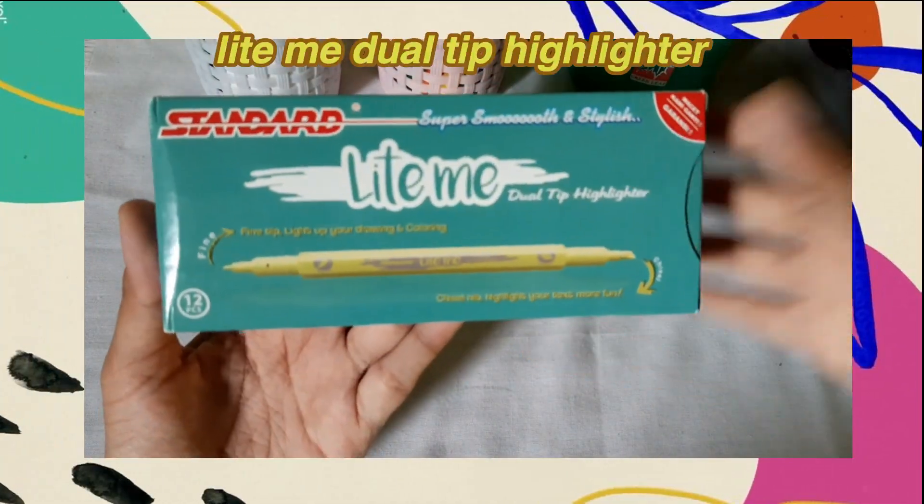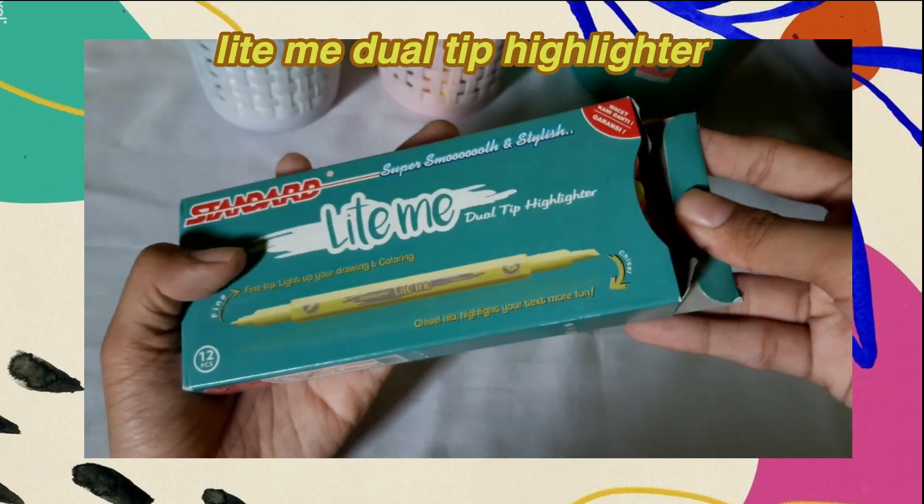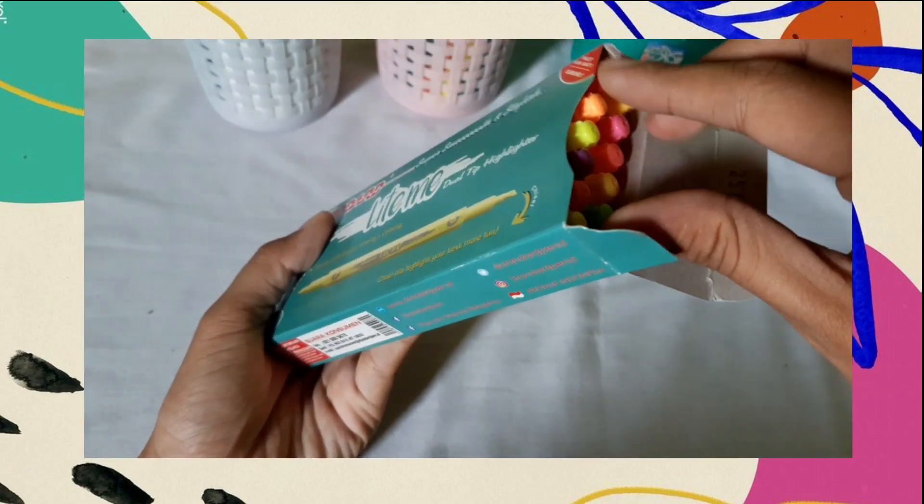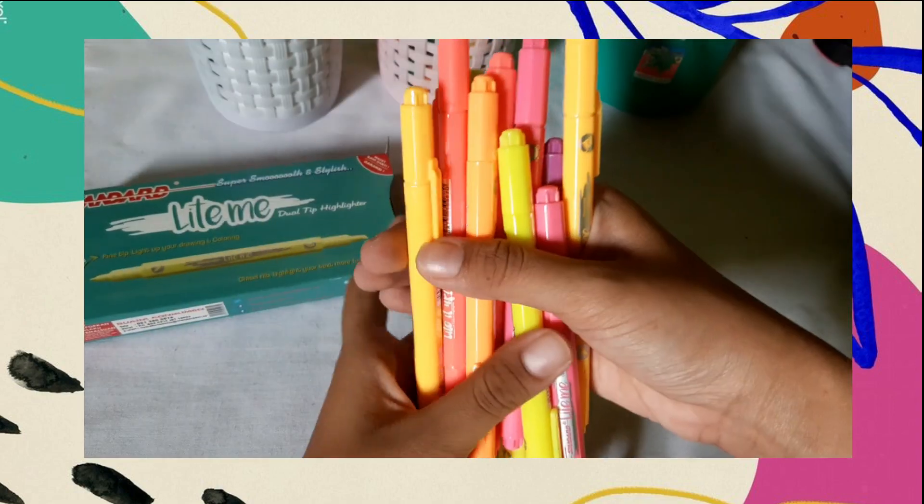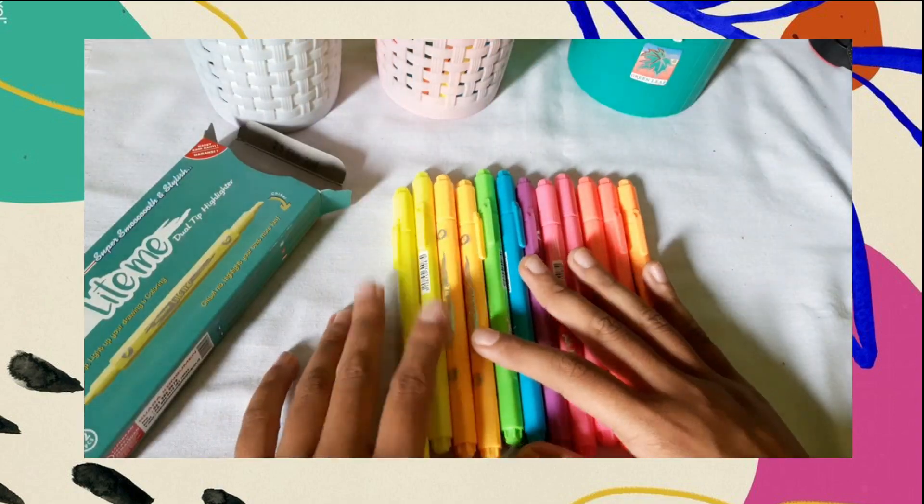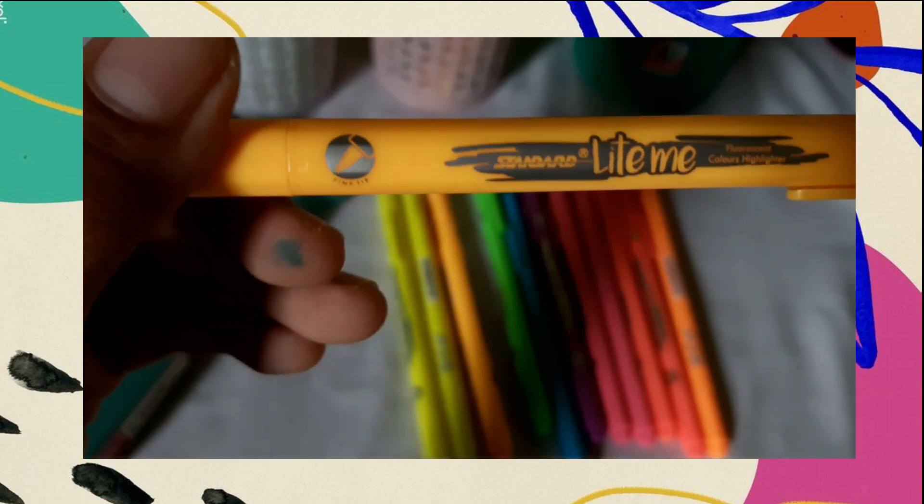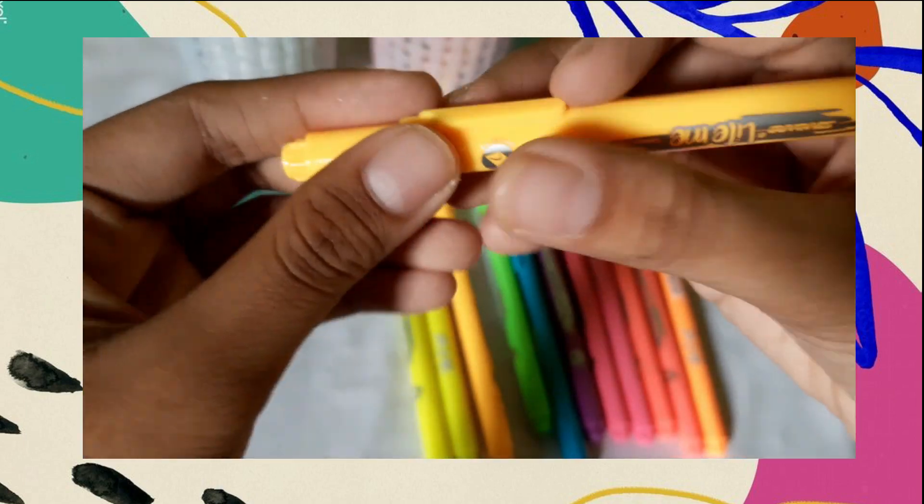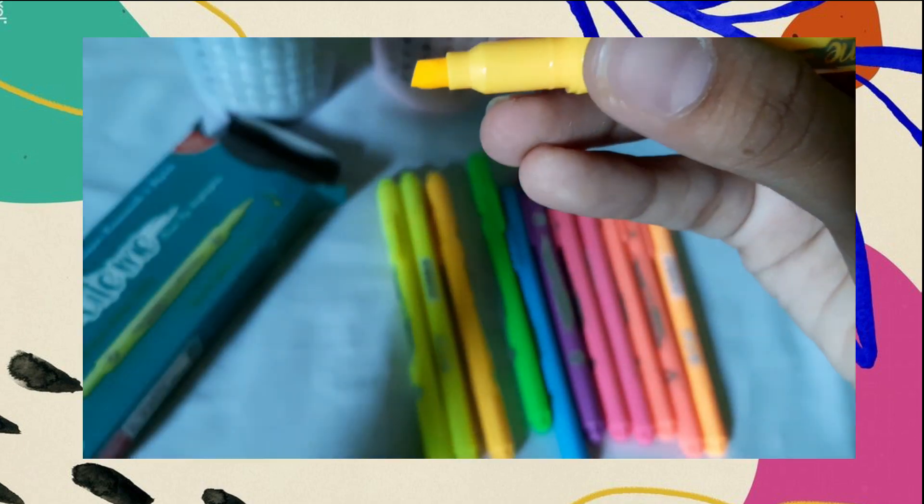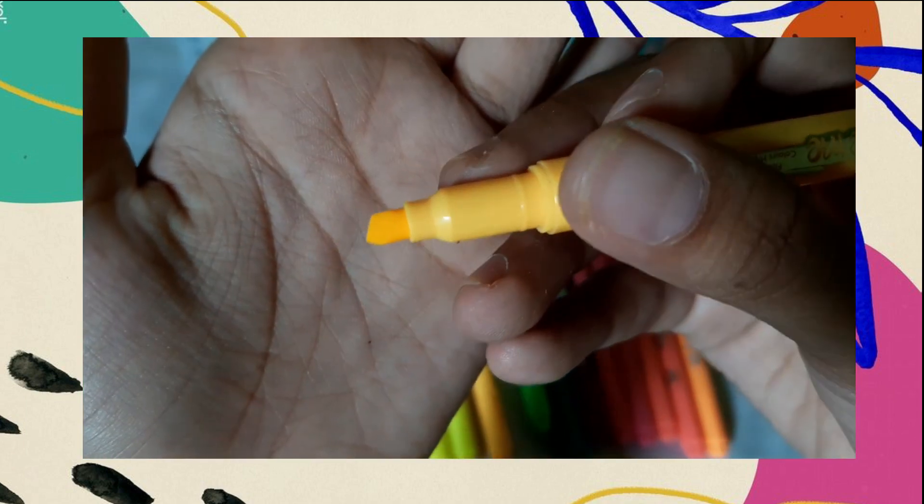Selanjutnya ada Lite Me Dual Tip Highlighter. Jadi ini warna highlighter-nya tuh neon. Terus ada 8 warna yang berbeda. Desainnya juga unik, ada kata light wrap di body pennya. Sesuai dengan namanya, pulpen ini punya dual tip. Yang pertama, chisel tip. Dia tipnya kayak highlighter pada umumnya.